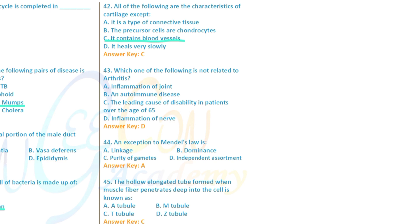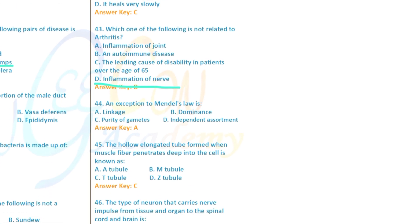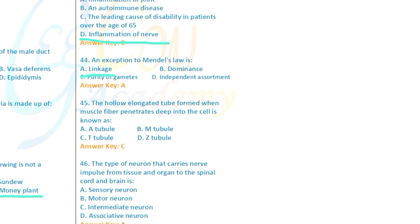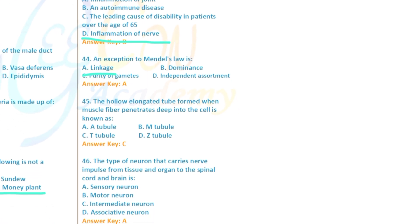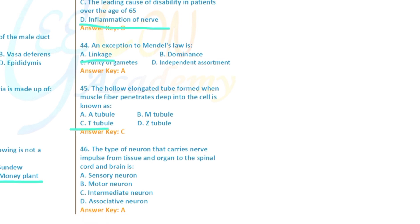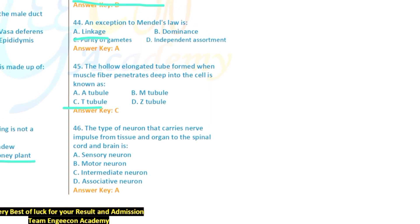Question 43: Which of the following is NOT related to arthritis? Rickets/osteomalacia is not related — inflammation of joints is. Mendel's exception is linked to gene linkage — option is ticked. Question 44: The elongated tube formed when muscle fibers penetrate a cell is known as a T-tubule.